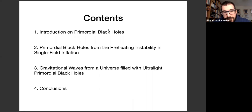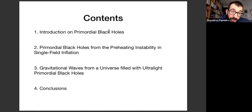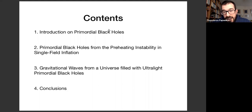I will make a short introduction about the field of primordial black holes. Then I will refer to a specific production mechanism of primordial black holes from preheating instability in the context of single-field inflationary theories, and how one can produce ultralight primordial black holes there. Then I will talk about induced gravitational waves which are produced in a universe filled with these primordial black holes, and how one can constrain the primordial black holes from these gravitational waves. Finally, I will conclude.